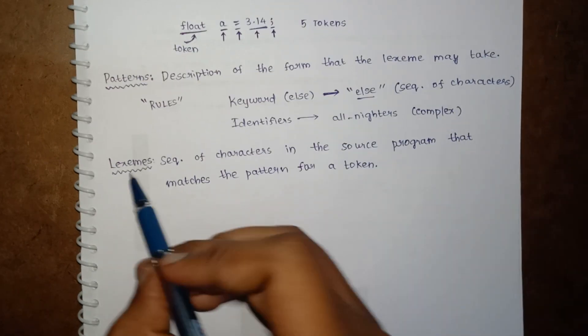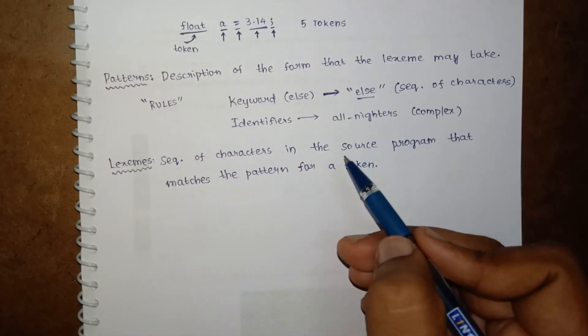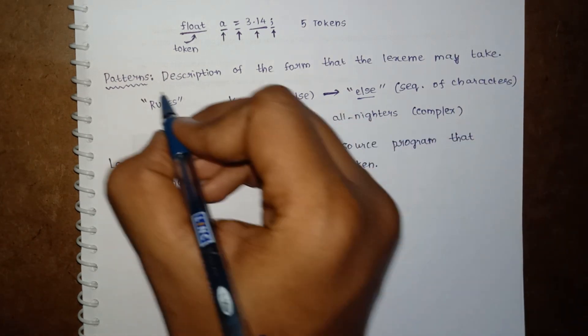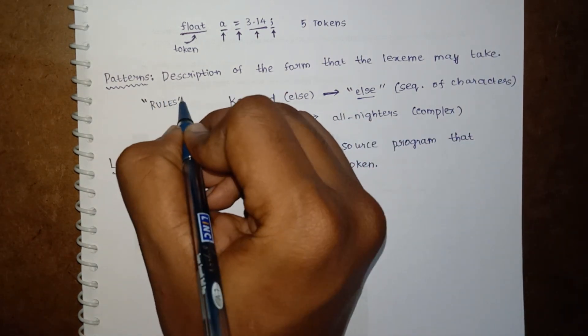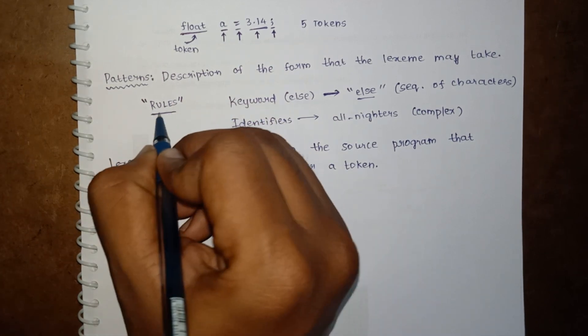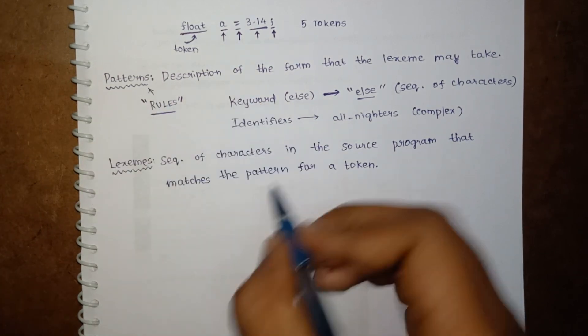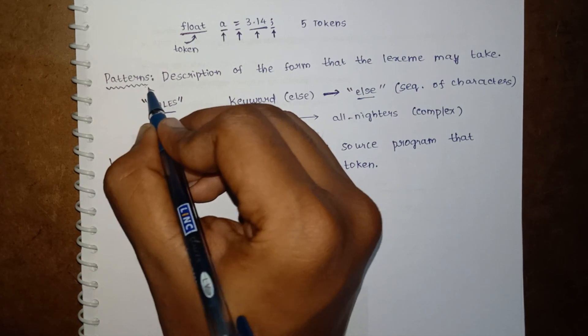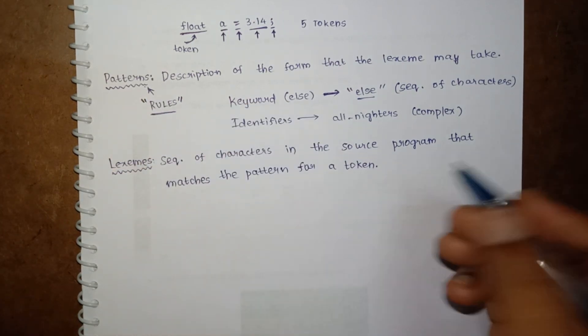That means lexeme is nothing but a sequence of characters that follows these rules to be considered. The follower of rules - rules are nothing but here patterns - that follows these patterns to be considered as a token.